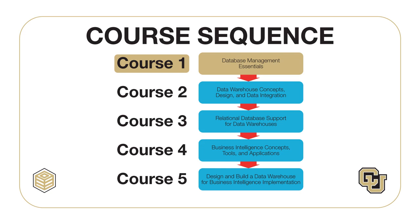Here is a brief description of the courses in this specialization. The first course provides database management background to support the details about data warehouses and business intelligence in the other four courses. If you already have a previous database course or substantial industry background, this course may be skipped. The second course covers project management concepts, data warehouse design techniques, data models, and data integration concepts and tools.